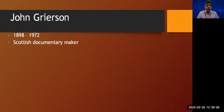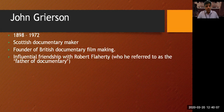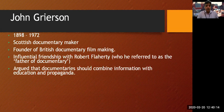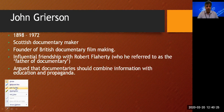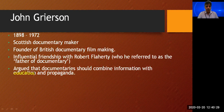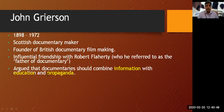John Grierson was a Scottish documentary filmmaker, 1898 to 1972, and the founder of British documentary filmmaking. He had an influential friendship with Robert Flaherty, whom he referred to as the father of documentary. He argued that documentaries should combine information with education and propaganda — meaning a documentary should carry information, lead to some kind of education, and propagate a message as well.